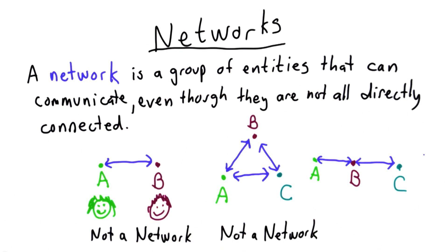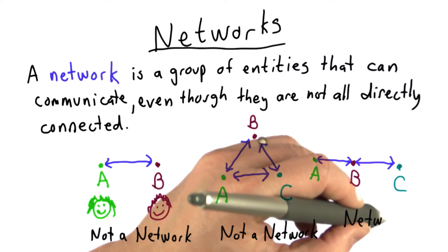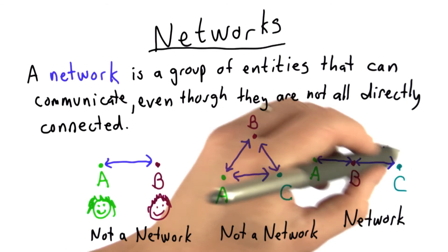What would be considered a network is this third example. And in the third example, we have three nodes. We have Alice, Bob, and Charlie. There are three people.